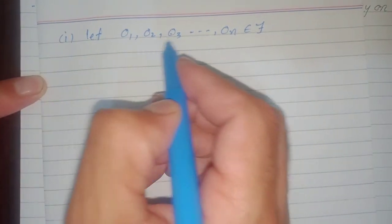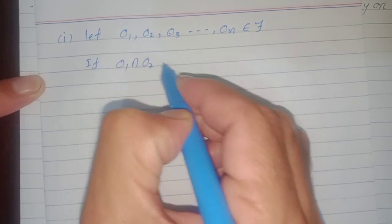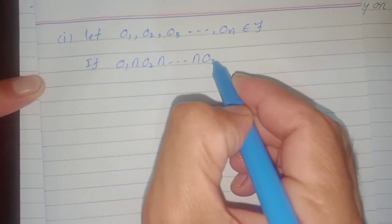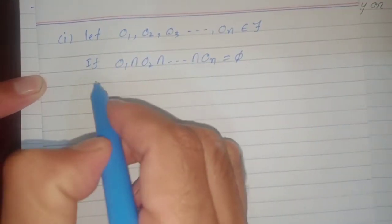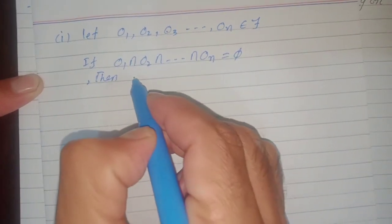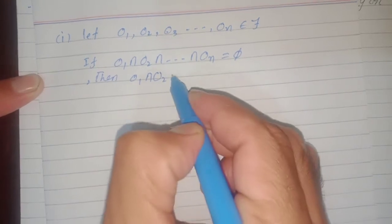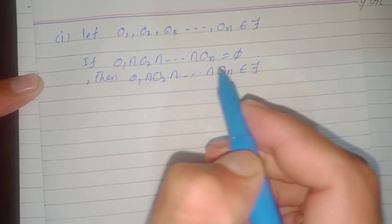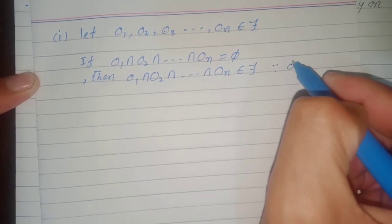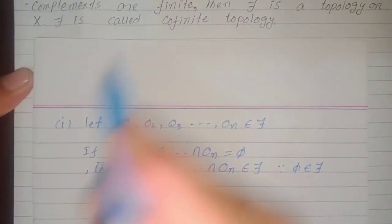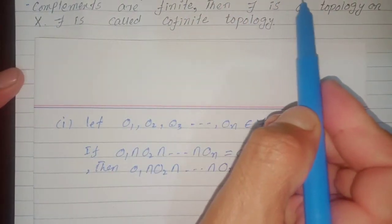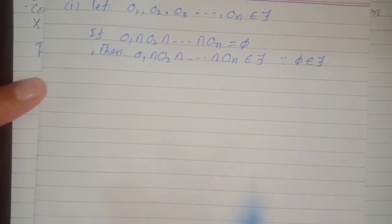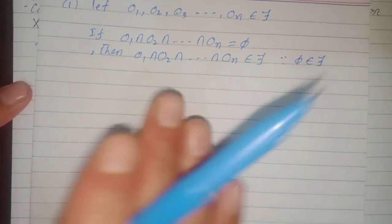We discuss two cases. Case 1: if O₁ ∩ O₂ ∩ ... ∩ Oₙ = φ, then O₁ ∩ O₂ ∩ ... ∩ Oₙ belongs to τ. The reason is that since φ belongs to τ — as we have defined that τ consists of φ and those subsets of X whose complements are finite — if this intersection equals the empty set, then this intersection must belong to τ, since φ is a member of τ.